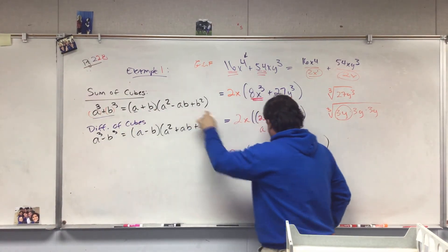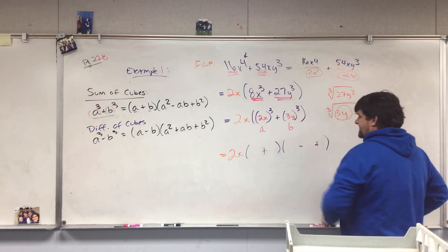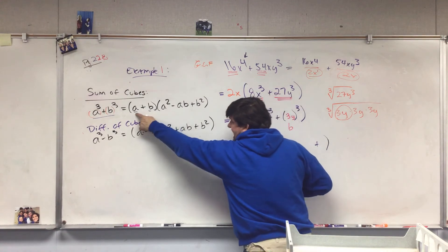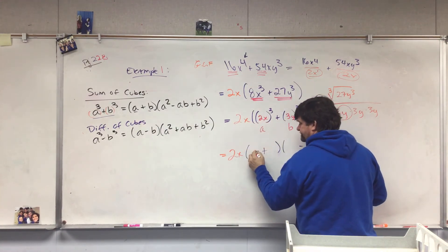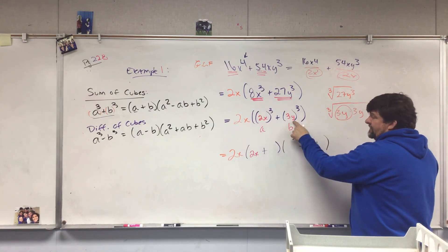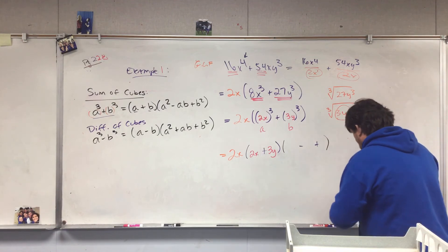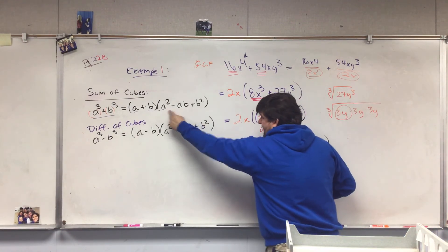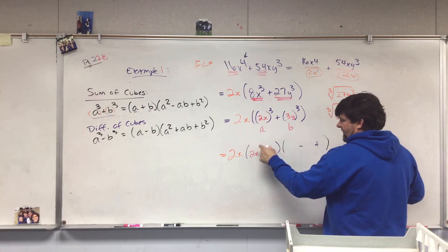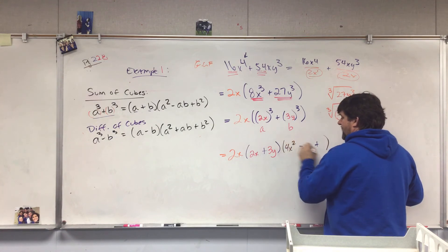It is a sum of cubes so my pattern is plus-minus-plus. Plus first, minus second, plus at the end. We put a in, a is 2X. We put b in, b is 3Y. Then all we do from there is just follow our pattern. We square a: (2X)². (2X)² is 4X².